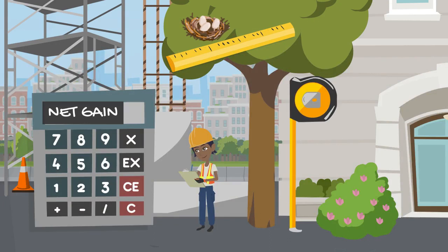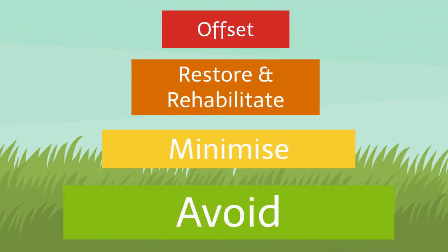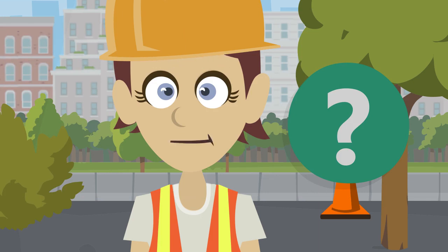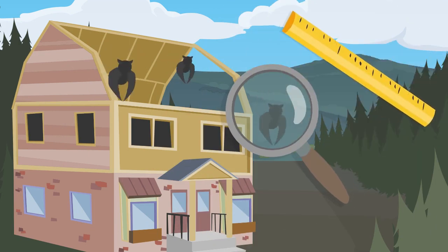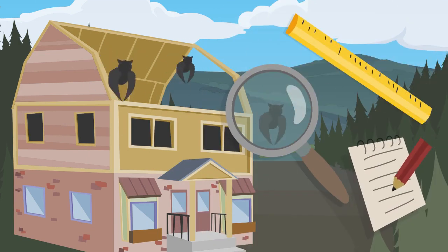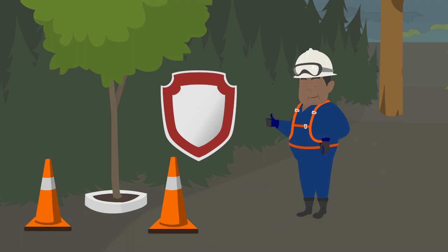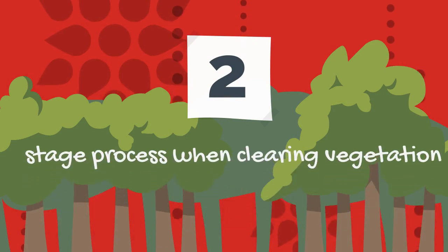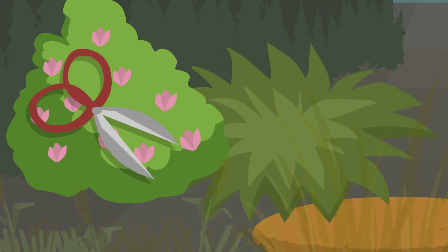On most construction sites, most of the impacts to biodiversity will have been worked out once work starts, as part of the site setup process. A plan will have been developed taking into account the biodiversity mitigation hierarchy. If impacts on biodiversity have been identified, you might be asked to put in place specific measures such as exclusion zones around trees or sensitive areas, or undertaking a two-stage process when clearing vegetation — first cutting to a specified height before complete removal to allow species to find new cover and habitat.